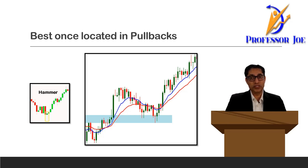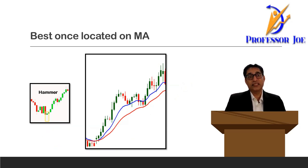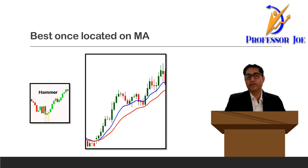Let us look at how we can use a hammer candlestick on a moving average. As you can see on this particular chart, the price actually went up. There is a crossover of the moving average and then the price came back to the 10 EMA. The blue line is the 10 EMA, and on the 10 EMA a wonderful bullish hammer candle is created. This is another wonderful entry point when you are using a bullish hammer candlestick pattern.